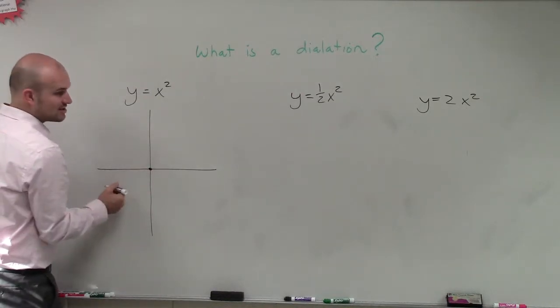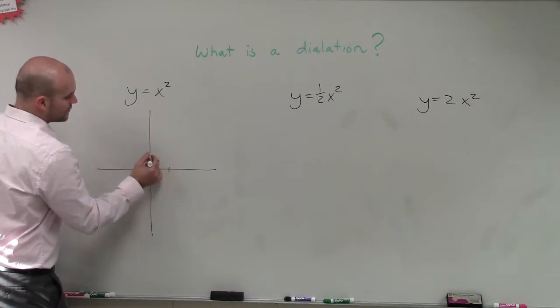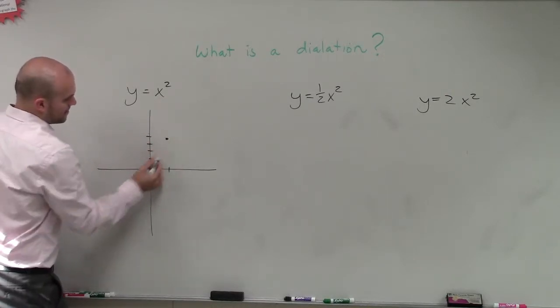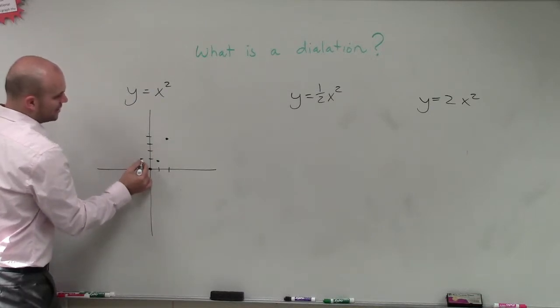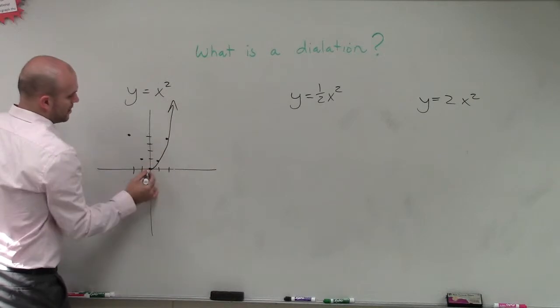And the identity function y equals x squared, when I create a table of values, I know I'm going to start at 0, 0. My next point would be over 1, up 1, and then over 2, up 4. And that works on the other side by applying my axis of symmetry.